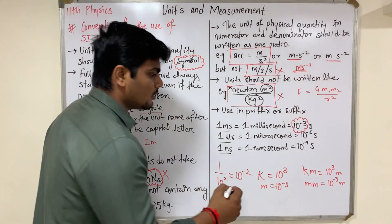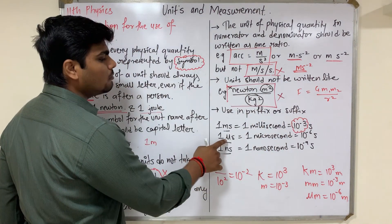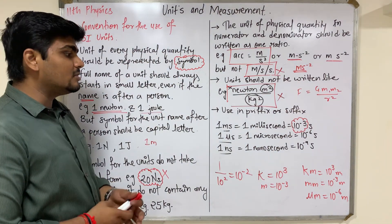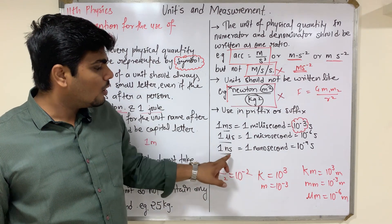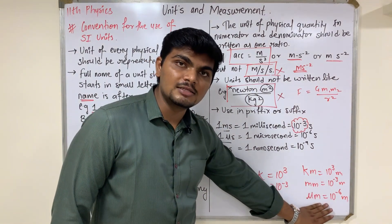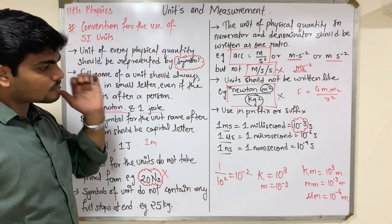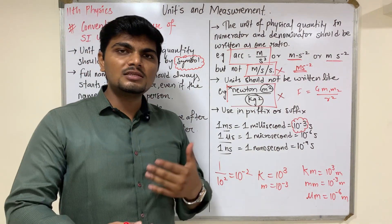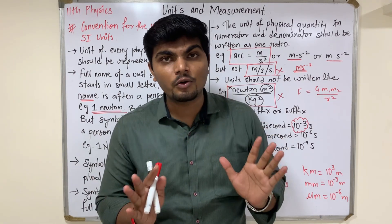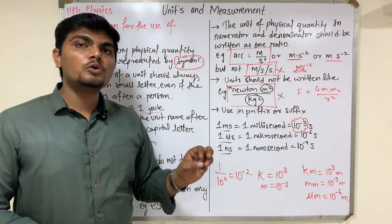Other common prefixes include 'micro' (μ) meaning 10⁻⁶ — so 1 micrometer = 10⁻⁶ meters, and 1 microsecond = 10⁻⁶ seconds. 'Nano' (n) means 10⁻⁹ — so 1 nanosecond = 10⁻⁹ seconds. These prefixes help us represent very small distances and time intervals. As we go through this chapter, you will learn how to use these in conversions and numerical problems.